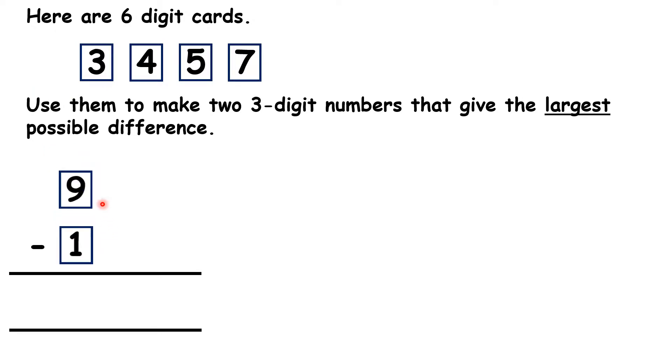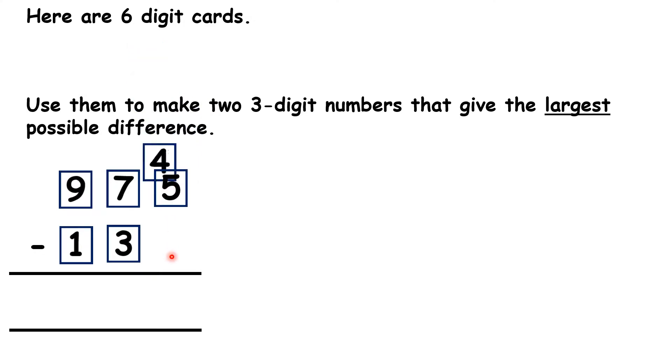Then, because the tens place value column is larger than the units place value column, we want to do the same thing again. So that puts the seven and the three in our tens place value column, which means we have the five and the four in our units.